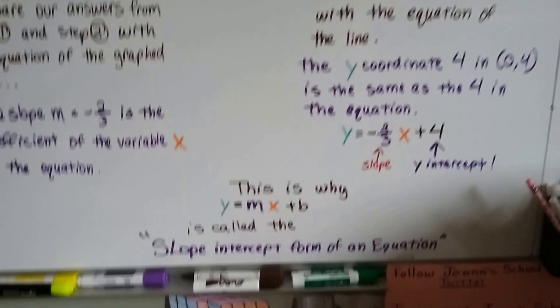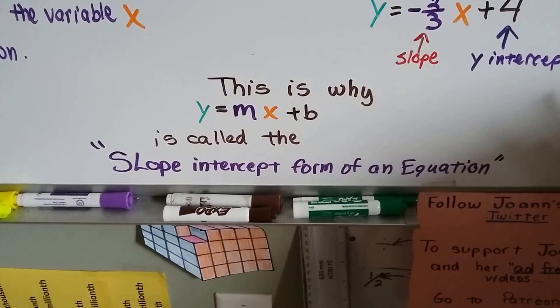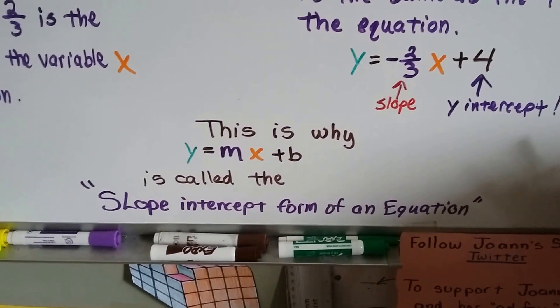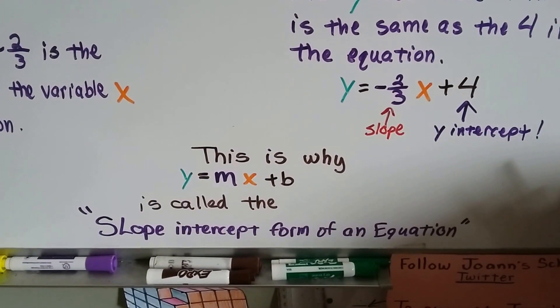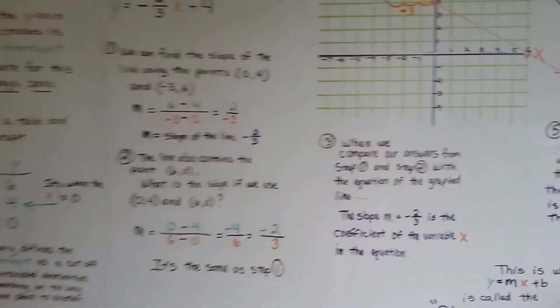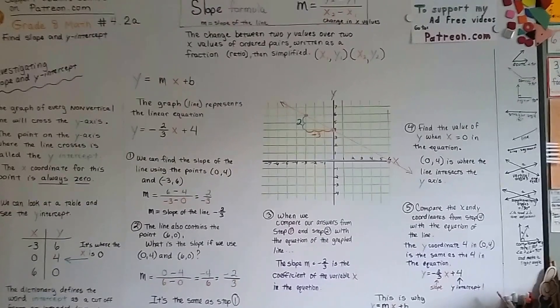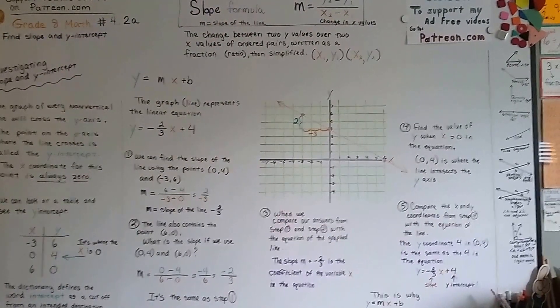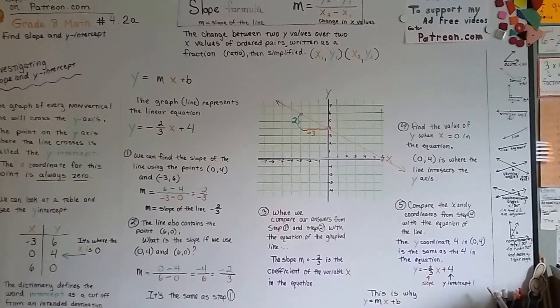So guess what? That's why they call the y equals mx plus b the slope intercept form of an equation. It's got the slope and it's got the y intercept right there. So it's the slope intercept form of an equation. Totally makes sense. I hope this was helpful. We're going to continue talking about slopes and y intercepts into the next video. And I hope you'll come with me and watch it. I'll see you there. Bye.